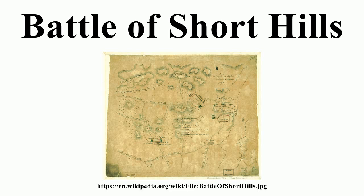Sterling's command, numbering about 2,500, comprised William Maxwell's New Jersey Brigade, Thomas Conway's Pennsylvania Brigade, Daniel Morgan's Corps of Riflemen, and Ottendorf's Corps. Maxwell's Brigade consisted of the 1st through 4th New Jersey Continentals and Oliver Spencer's Additional Regiment, while Conway's consisted of the 3rd, 6th, 9th, and 12th Pennsylvania Continentals. Ottendorf's Corps, although named for its principal recruiter, a German mercenary named Nicholas Dietrich, Baron de Ottendorf, was commanded by Charles Armand, a French soldier of fortune who was given its command in May 1777 after Ottendorf abruptly left the army.